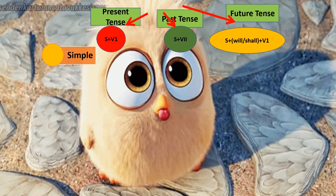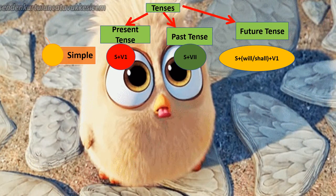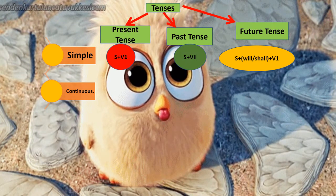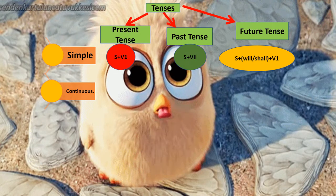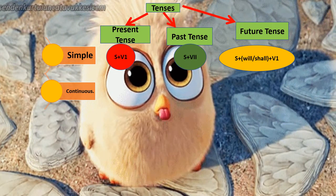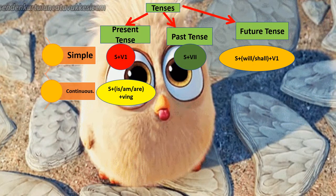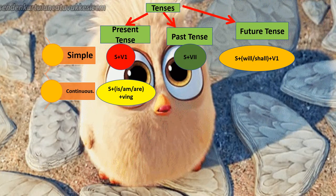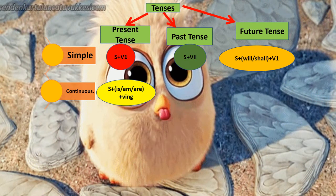Let us move to present continuous tense. 'Continuous' tells you it will have ING, and 'present' tells you the helping verb should be is/am/are — it cannot have was/were. Formula: subject + is/am/are + V-ING. For example: 'she is cooking' or 'I am cooking'.